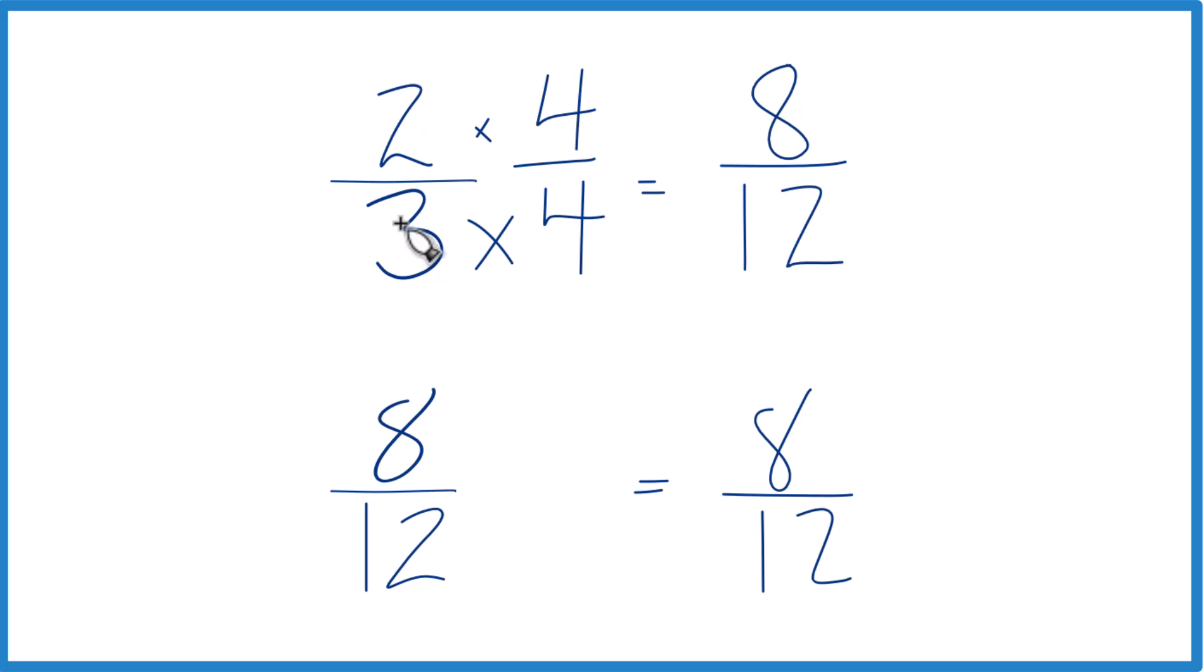So eight-twelfths, that's the same thing as two-thirds. They're equivalent fractions. And you should be able to see right now that eight-twelfths, well it's the same as eight-twelfths, so it's equal.